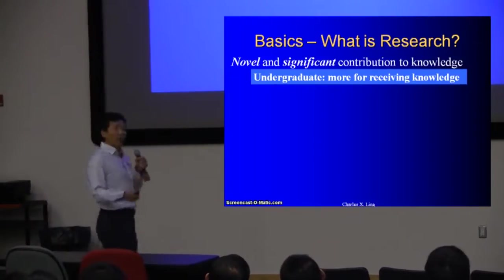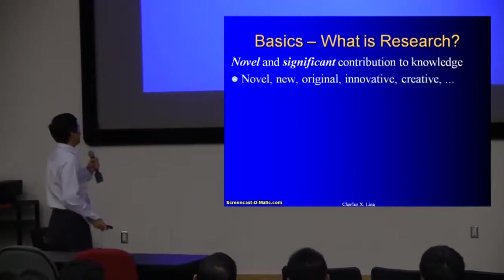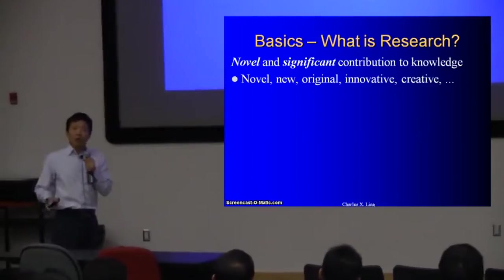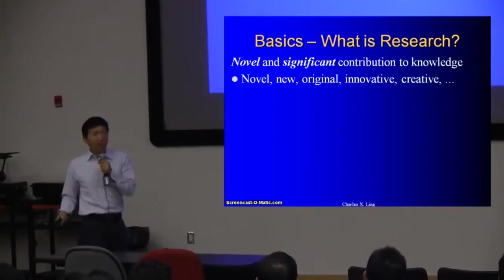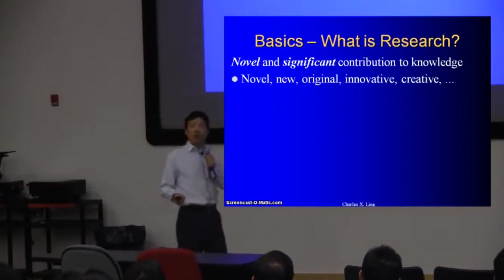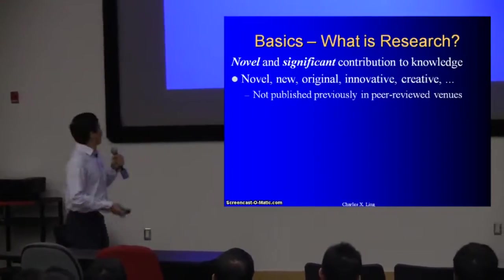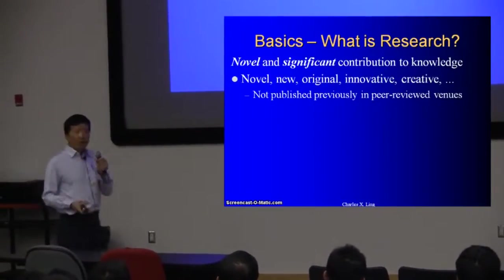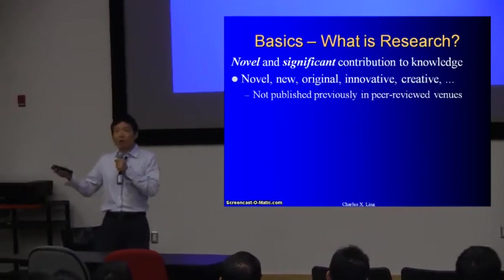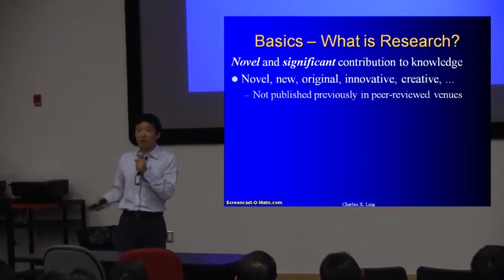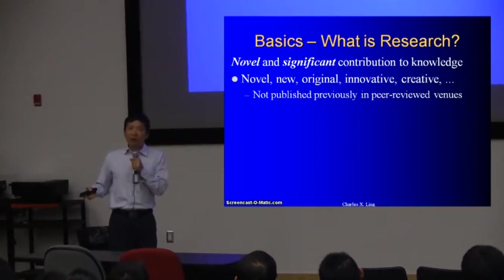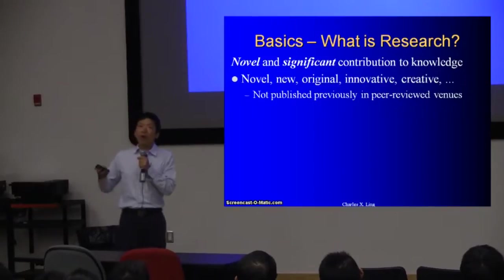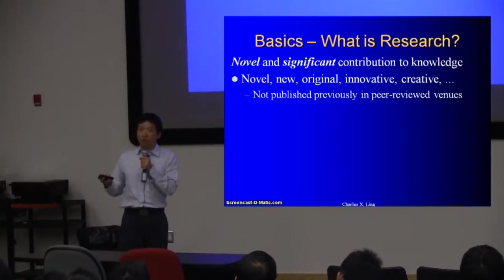There are two important keywords. One is novel — also called new, original, innovative, groundbreaking, creative, et cetera. In academics or research, novel usually means it has not been published previously in peer-reviewed journals, magazines, or academic venues. Why peer reviews? In research or academics, we have very high standards. We want our peers to review our work to make sure that it is true and rigorous.